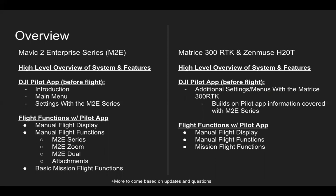Then we'll build on that with the M300 RTK, where we talk about additional settings and additional flight functions that are available with the system. The Mavic 2 Enterprise is kind of our baseline enterprise system, and the Matrice 300 RTK and the H20T are the new flagship systems. There will definitely be more content to come based on updates and questions that may arise, but hopefully this is a really good start to understanding what's going on with the Pilot app, the different settings and items you see, and how it works with some of the different drones.